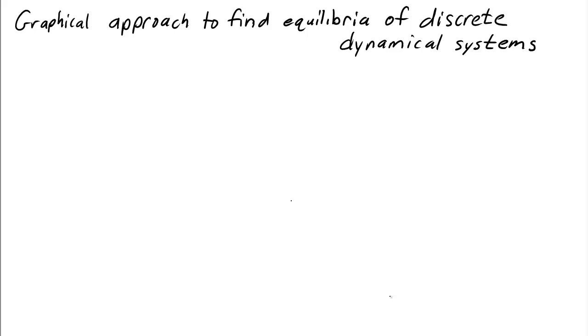Here we look at a graphical way to find equilibria of discrete dynamical systems. First of all, what is an equilibrium? An equilibrium is a value of the state variables where they do not change.